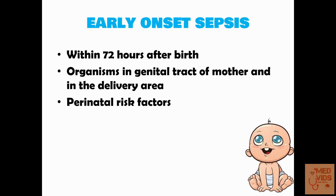If there are more perinatal risk factors during the delivery of the child, the chances of developing early onset sepsis also increase. For example, perinatal risk factors like prolonged rupture of membranes, prolonged labor and a few other risk factors associated with the delivery of the neonate are also associated with increased chances of developing early onset sepsis. Early onset sepsis usually manifests with pneumonia; it less commonly manifests as generalized sepsis or meningitis.